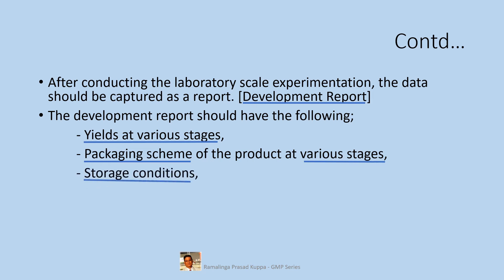Storage conditions — whether to store at controlled room temperatures and acceptable humidity conditions — should be prescribed. Also, if there is any requirement for an inert atmosphere like blanketing with nitrogen, it should be indicated. Even the type of sealing — whether it should be heat sealed or fastened with a cable tie — should be prescribed.